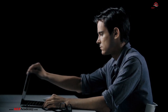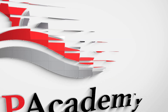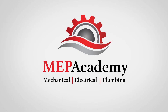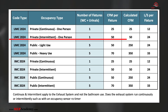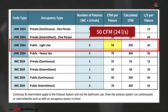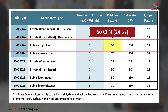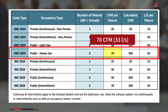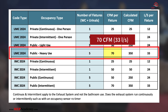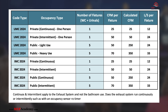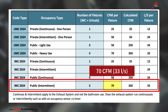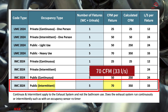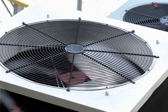Let's start with the basics. According to the 2024 UMC, light-use public toilet rooms require 50 CFM per water closet or urinal. Heavy-use areas like stadiums or airports may require 70 CFM per water closet or urinal. The 2024 IMC is similar: 50 CFM per water closet or urinal if the fan operates continuously, or 70 CFM per fixture if the exhaust system runs intermittently.